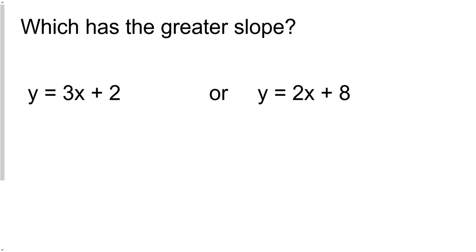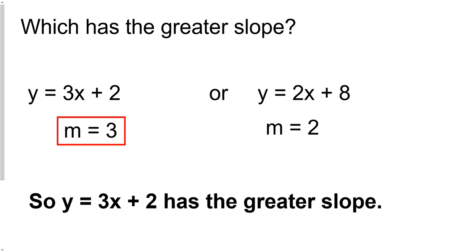So which slope is greater between these two equations? You go find the slope from each of them, and you can compare. And easily you can see that y equals 3x plus 2 has the greater slope. 3 is bigger than 2. And it's not always going to be like that.